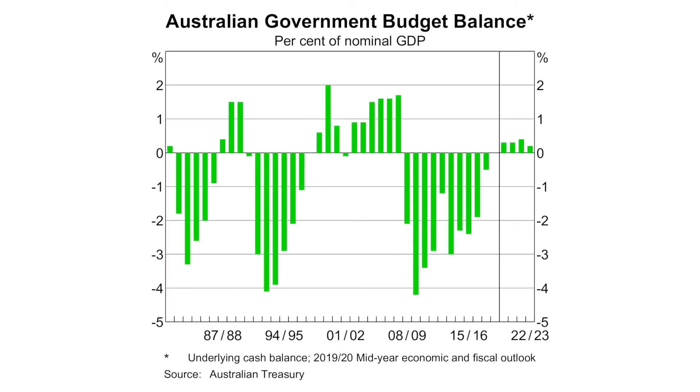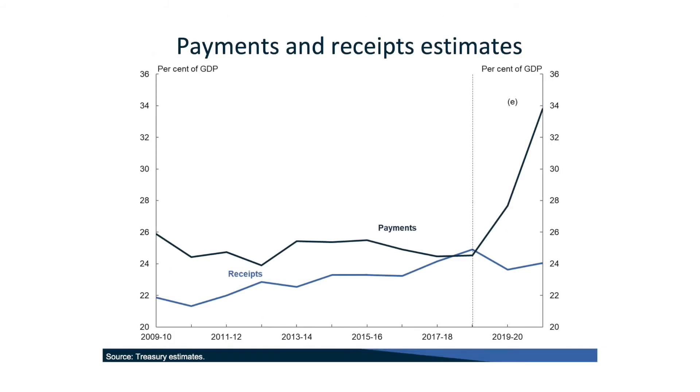A fourth objective that fiscal policy could aim for — not explicitly in the syllabus but helpful for understanding Australian examples — is fiscal consolidation. Between winning the election in 2014 and the 2020 coronavirus, the Liberal government was very focused on fiscal consolidation, which is to bring the budget from deficit to surplus. In 2019, Treasurer Josh Frydenberg announced that Australia was projected to reach a surplus, showing progress towards this goal. But with the effects of the coronavirus on economic activity, the government had to forego this objective and take an expansionary stance.